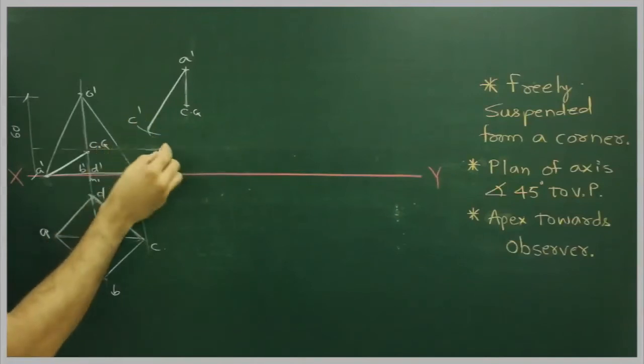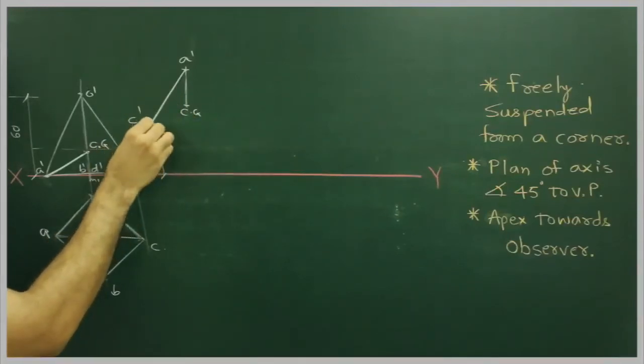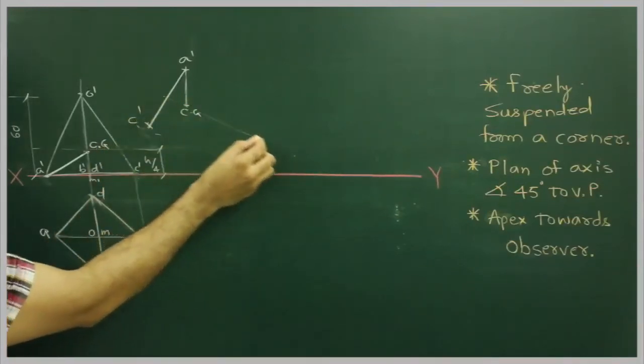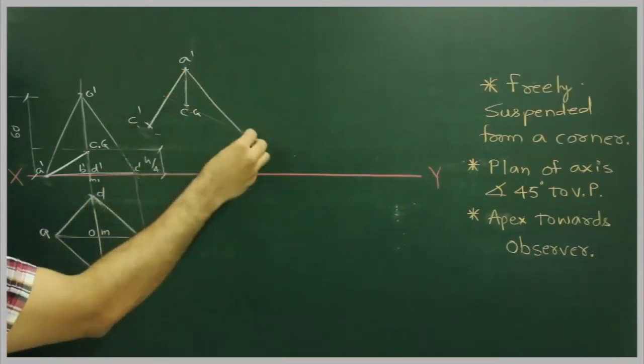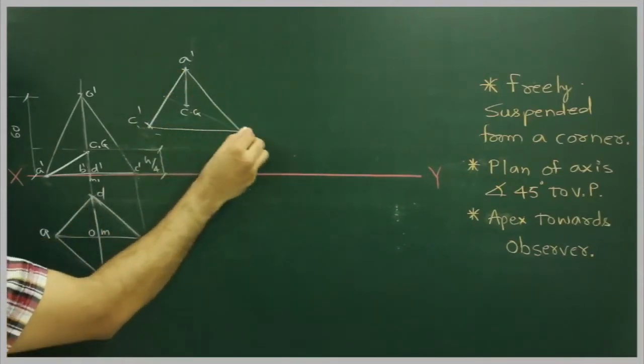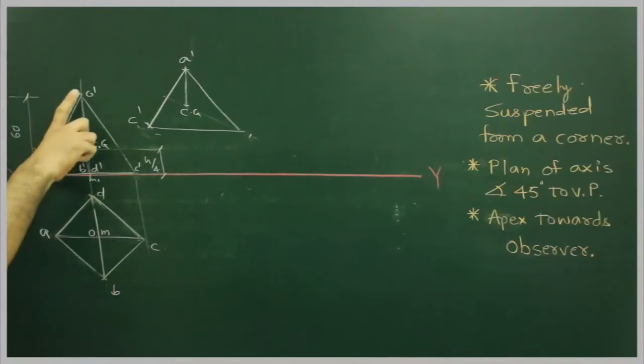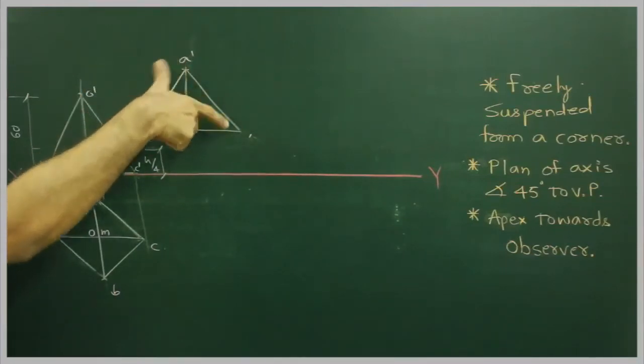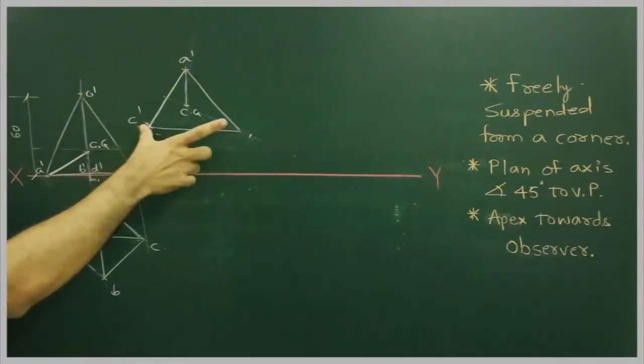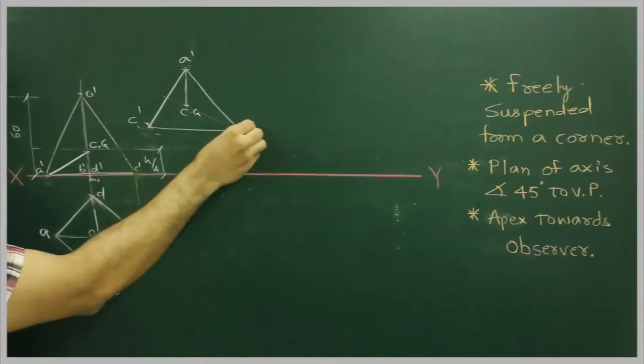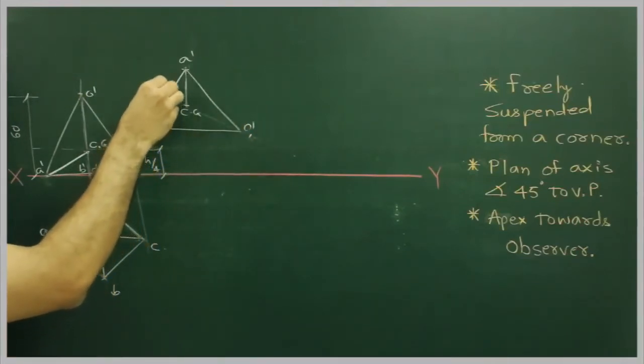So we will get point C prime and we will take A prime to O prime and we will cut on this side. We will take C prime to O prime and we will cut here. So we will get point O prime and this is B prime, D prime.